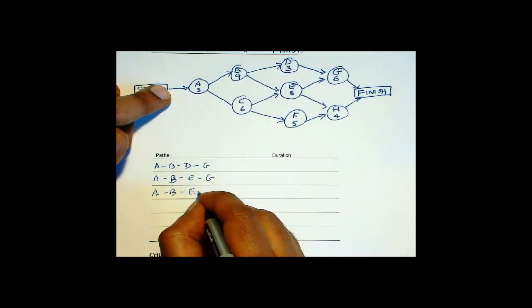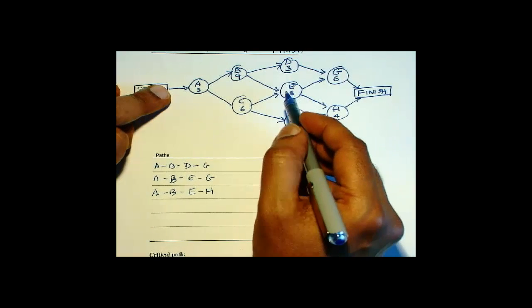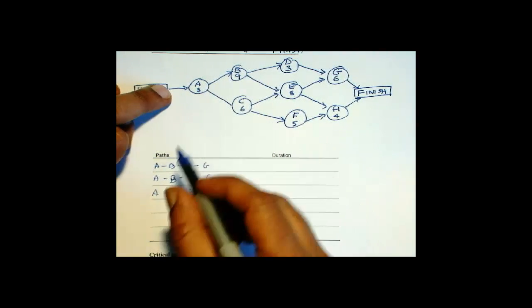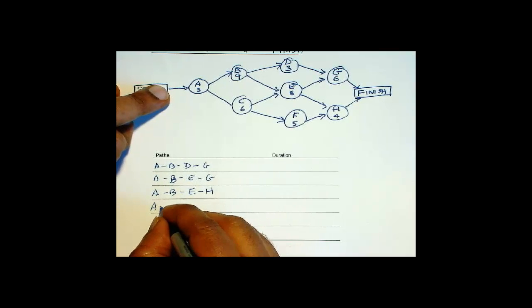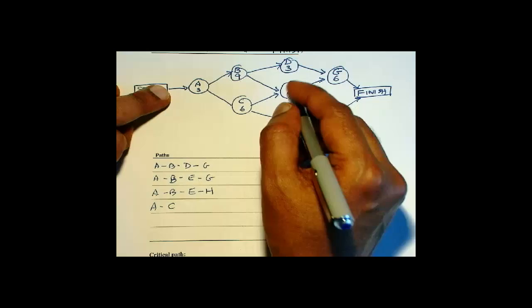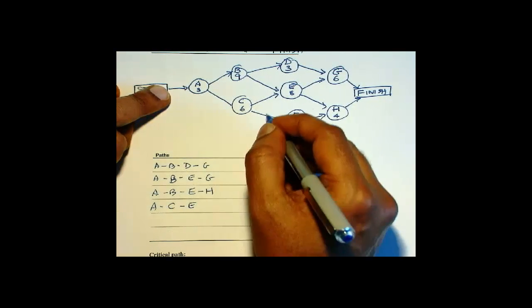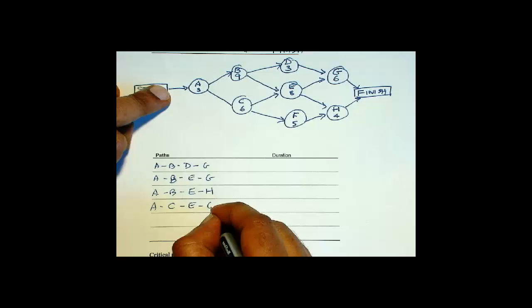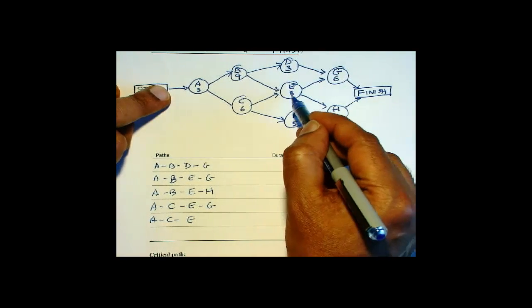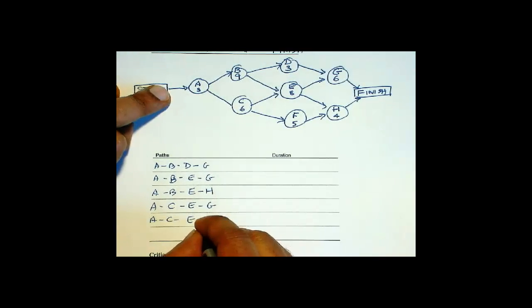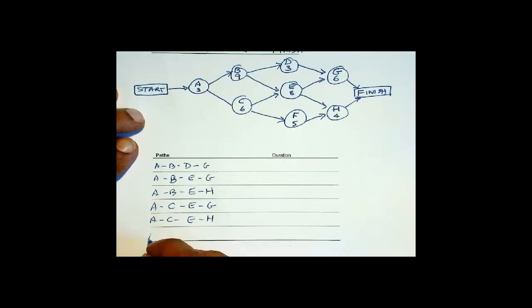Now go back to A and make the other choice: C. And once again take the upper choice — E and G. Then trace back to E and take the other choice: H. Then trace back further and you get A, C, F, H. So these are all the paths.